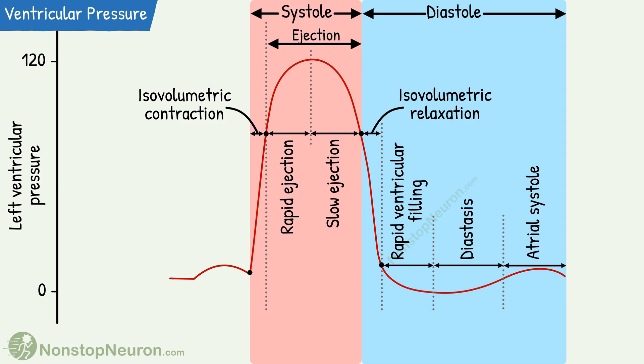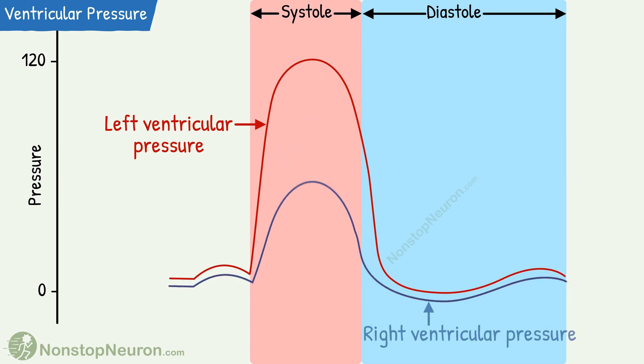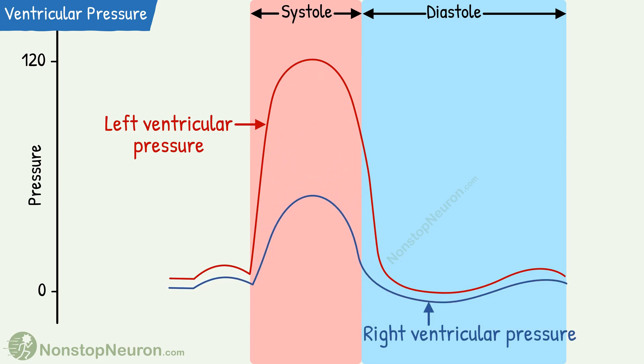So these are the pressure changes in the left ventricle. As mentioned at the beginning, the right ventricle follows a similar pattern, but the pressure is on the lower side. For example, the maximum pressure in the left ventricle is 120 mmHg, whereas that in the right ventricle is about 25 mmHg. The higher pressure in the left ventricle is due to a thicker wall that generates more force.